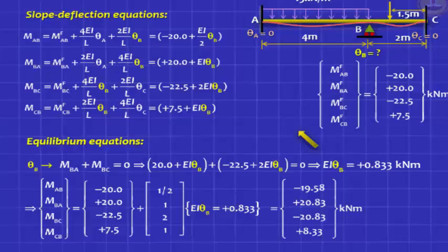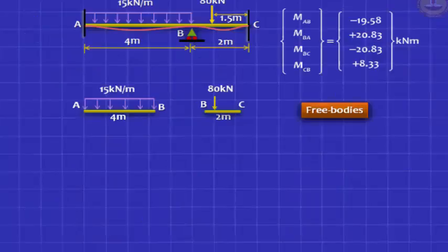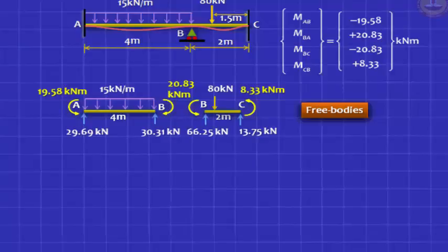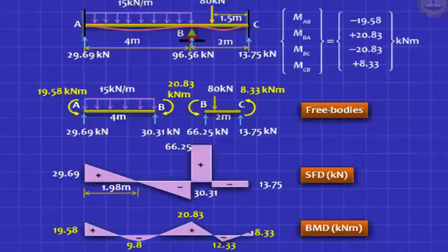Now, it does not end here. After this, you draw the free body diagrams. Write down the answers. Separate out your beams. Draw the moments at theta B minus 19.58 plus 20.83 minus 20.83 plus 8.33 should be clockwise. That is a mistake. And then, you must correctly get the reactions. I hope these reactions are correct. You have to check them out that 8.33 should be clockwise. Draw the shear force diagram and draw the bending moment diagram. But the bending moment diagram seems to be correct.